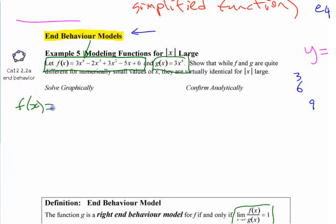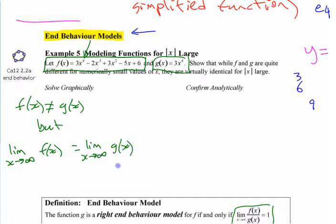Are their limits the same as you approach infinity? f of x is obviously not equal to g of x, but the limit as you approach infinity of f of x is equal to the limit as x approaches infinity of g of x. Now, what was the limit? What happened to the graph as you went to the right or left for those two graphs? Did they level off at something?